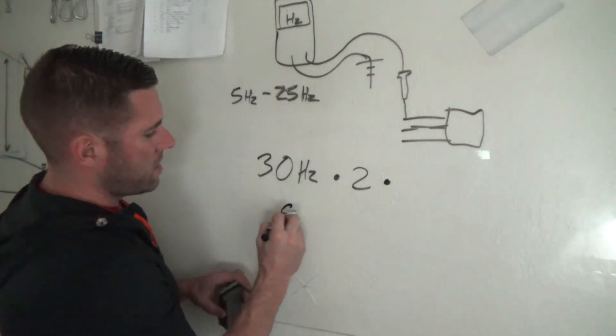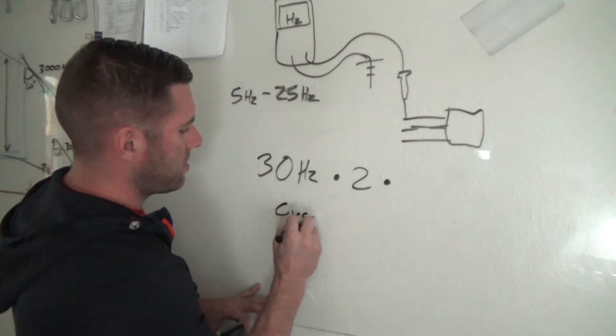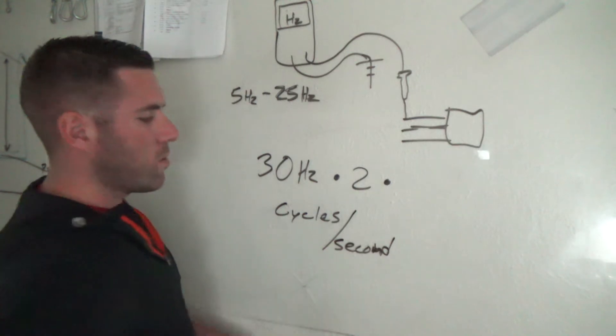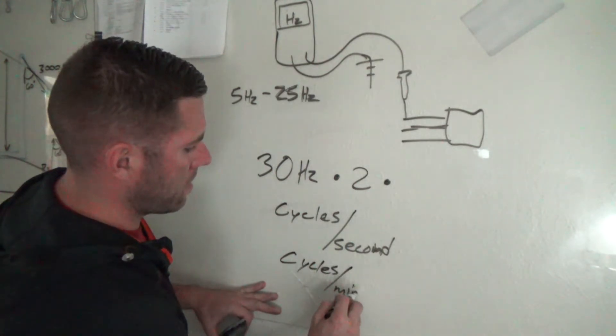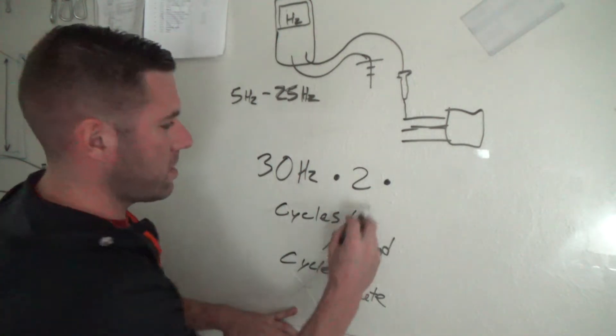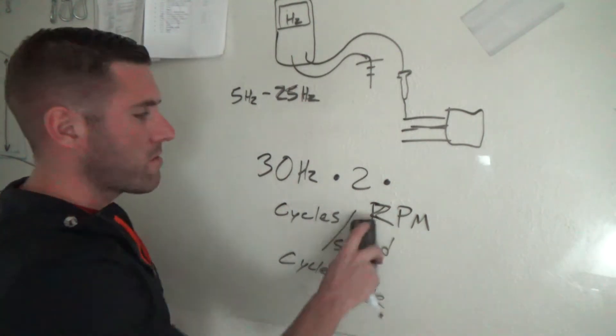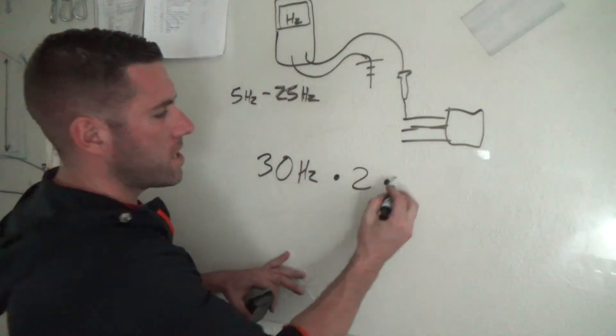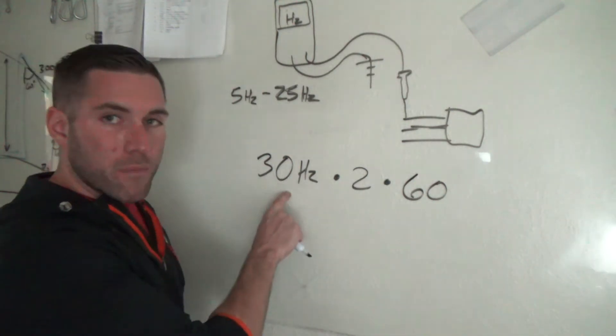We're accounting for all the ones that are sparking and all the ones in between. So we're doubling our number. Then we have to multiply it again because guess what? Hertz is cycles per second. What we need is we need cycles per minute. Why do we need per minute? Because it's revolutions per minute, RPM.